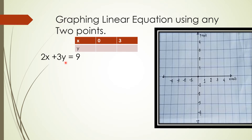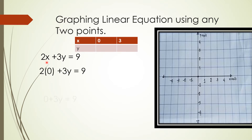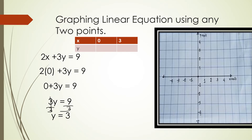We have 2x plus 3y is equal to 9. I'm going to substitute x = 0: 2 times 0 plus 3y equals 9. That gives 0 plus 3y equals 9, so 3y equals 9. Dividing both sides by 3, we get y equals 3.